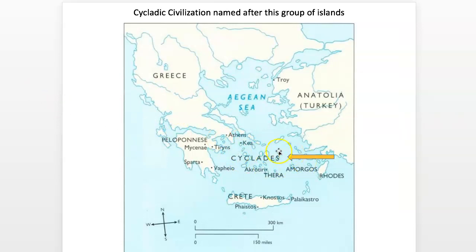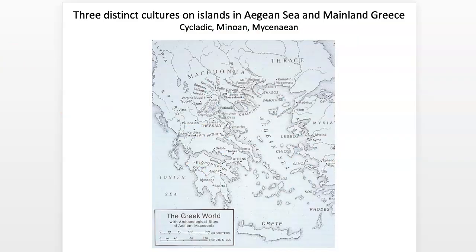Cycladic is going to be mostly on this grouping of islands. The Minoan culture will be primarily around Crete, and we'll look at one site in Thera. Then the Mycenaean culture is going to be on the Peloponnesian Peninsula over in this area — Mycenae is their main site.